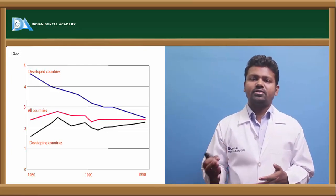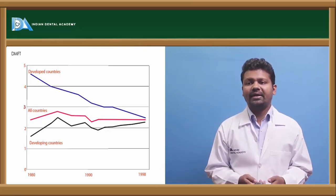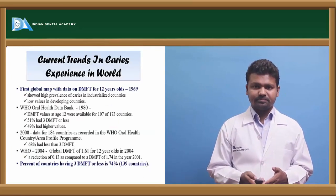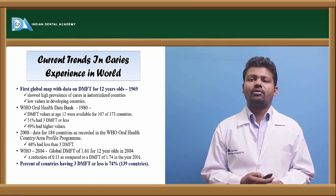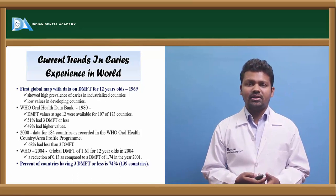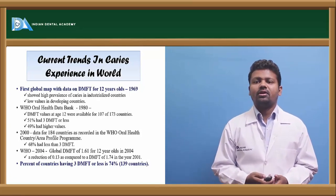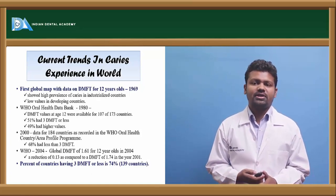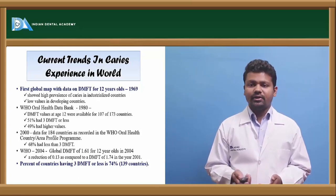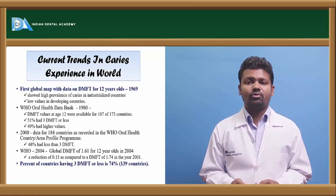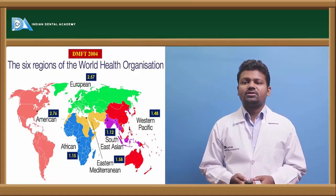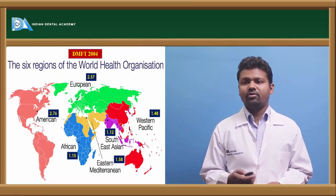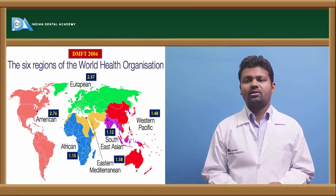In developed countries, there has been a tremendous decrease in dental caries due to the facilities and protocols they follow. The first global map of DMFT was developed in 1969, showing high prevalence of caries in industrialized areas. WHO data showed that 51% had a DMFT score of 3. In the year 2000, data from 184 countries recorded by WHO showed that 60% had less than a DMFT score of 3. Percent of countries having 3 DMFT or less is 74% among 139 countries. In 2004, Southeast Asia had a DMFT of around 1.2, European countries had 2.57, and American countries had 2.76.